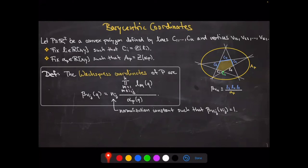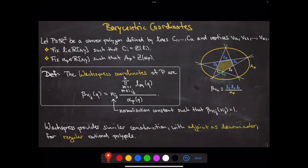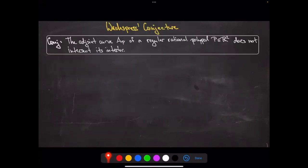The adjoint appears in the denominator of the Wachspress coordinates, so the adjoint polynomial should not vanish on the interior of the object. That's the Wachspress conjecture: for regular polypoles in the plane, the adjoint curve does not pass through the interior. This conjecture is crucial because otherwise the barycentric coordinates are not well defined. The conjecture also implies the adjoint is positive on the interior, consistent with axiom (a) requiring coordinates to be positive.